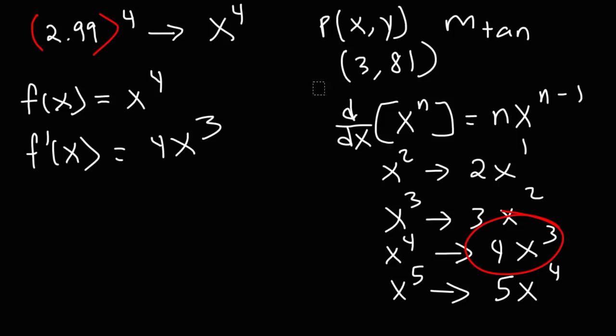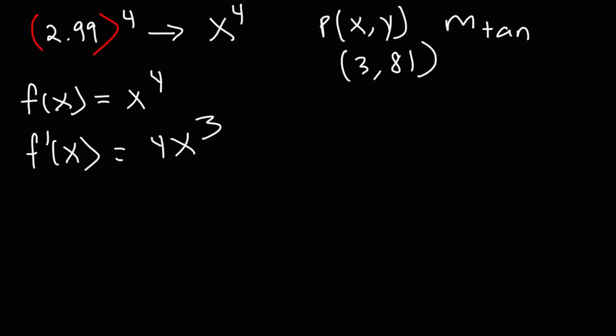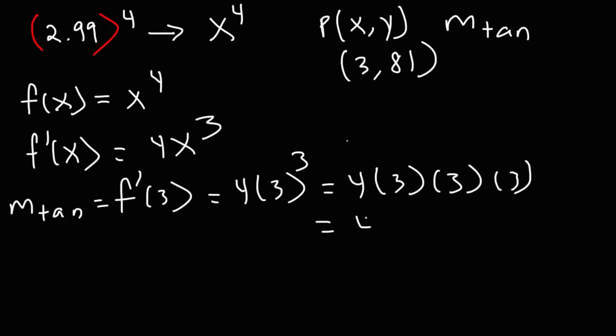So now that we have f prime of x, we can calculate the slope of the tangent line. The derivative is a function that will tell us the slope of the tangent line at any x value. Now our x value is 3. So we need to calculate f prime of 3. And that's going to be 4 times 3 to the third power. So this is 4 times 3 times 3 times 3. 3 times 3 is 9 times 3 is 27. Now 4 times 20 is 80. 4 times 7 is 28. 80 plus 28 is 108. So the slope of the tangent line is equal to 108.